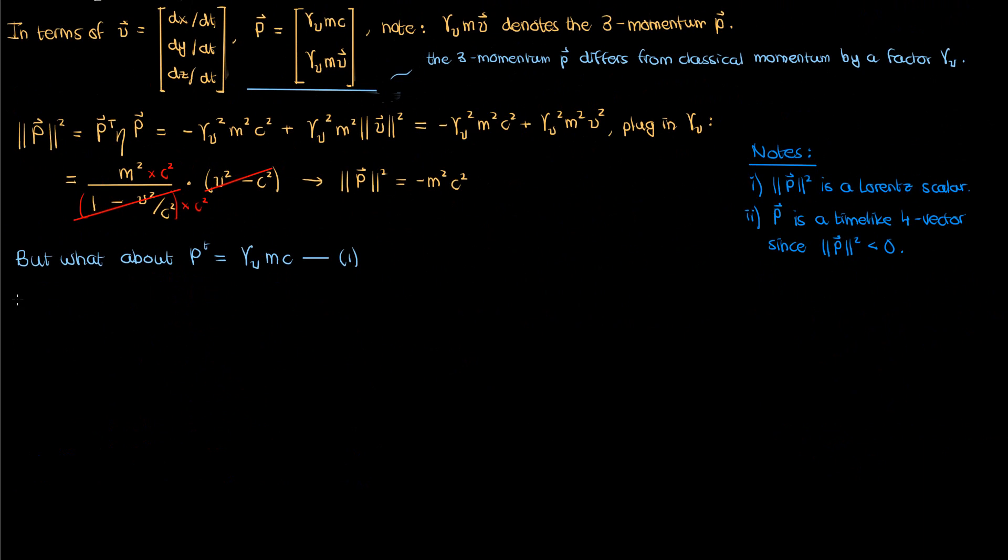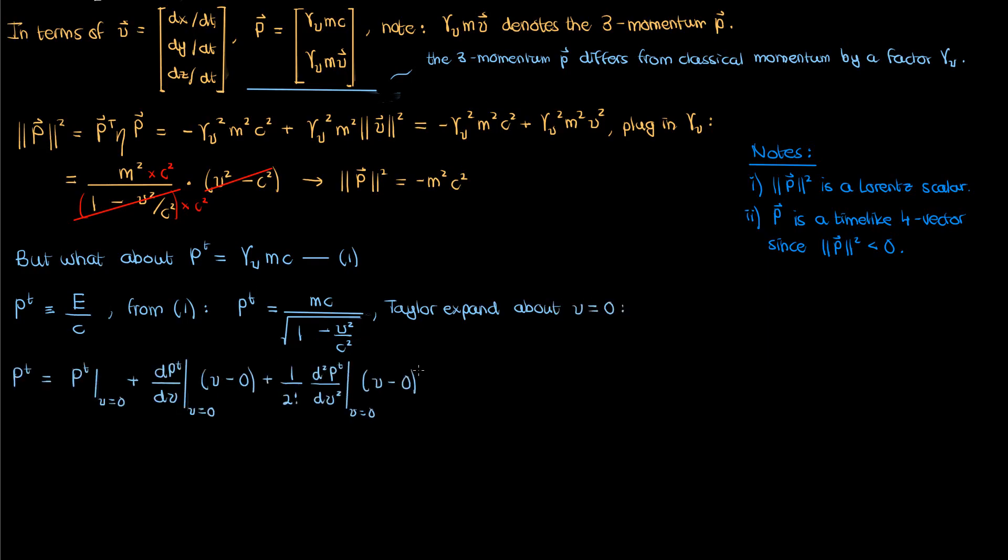I'll call this equation 1. You'll see that this p^t component is defined as the total energy E of the particle divided by the speed of light c. To see why this might be the case, let's take equation 1 and write out the γ, the Lorentz factor. If we perform a Taylor expansion of this p^t around v equals 0, then by the Taylor expansion formula, this is what we have. You can see that at v equals 0, p^t is just mc, so this first term is actually mc, but we still need to evaluate the derivatives.